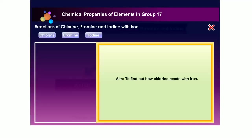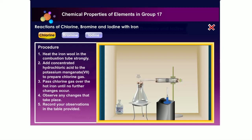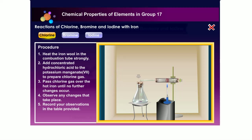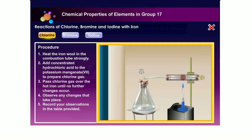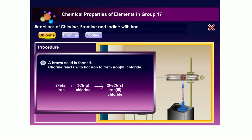Let us now find out how chlorine reacts with hot iron. Chlorine reacts with hot iron to form iron(III) chloride.